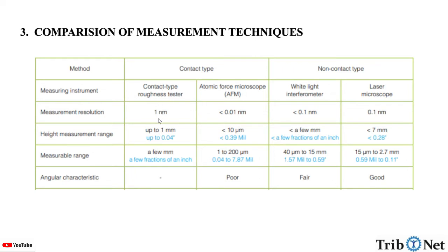Height measurement range for contact type roughness tester is up to 1 mm, and for atomic force microscopy it is less than 50 µm. For optical profilometer it is a few millimeters, and for laser microscope it is less than 7 mm.